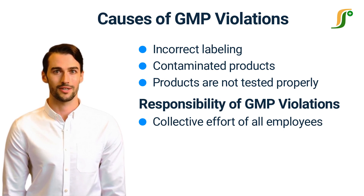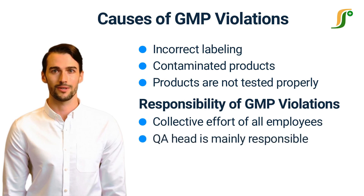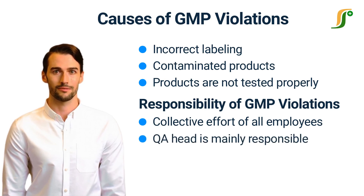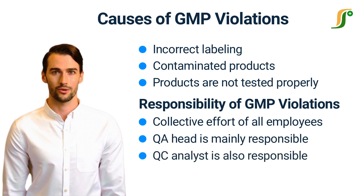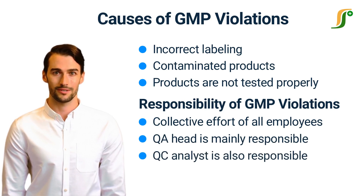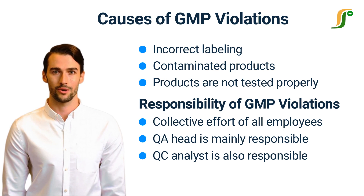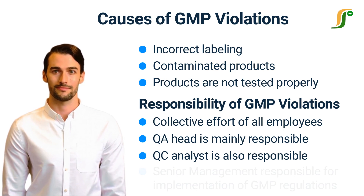Quality assurance is there to ensure product quality; therefore, the quality assurance head is mainly responsible for any GMP violation. Quality control also plays an important role in maintaining product quality, so the person analyzing the product is also responsible for the production of quality-compromised products.